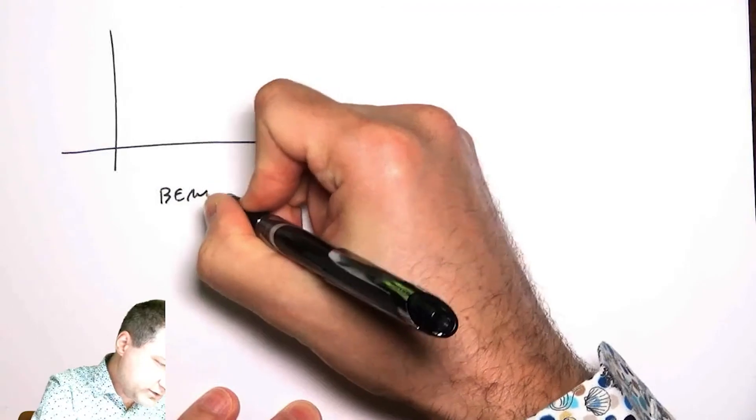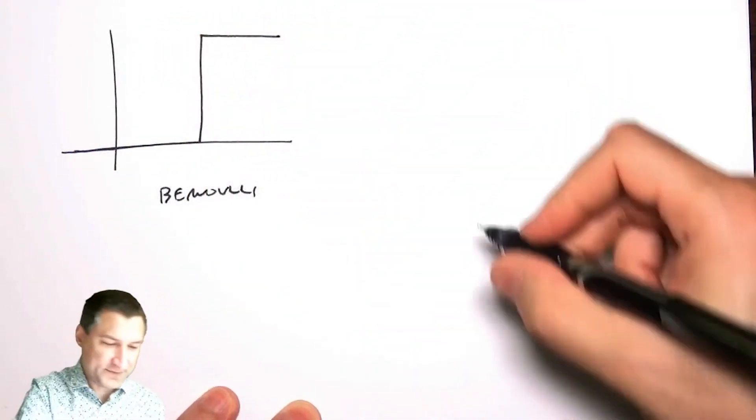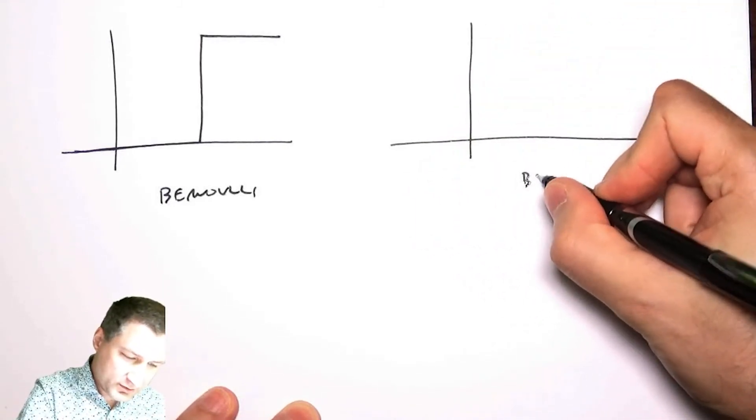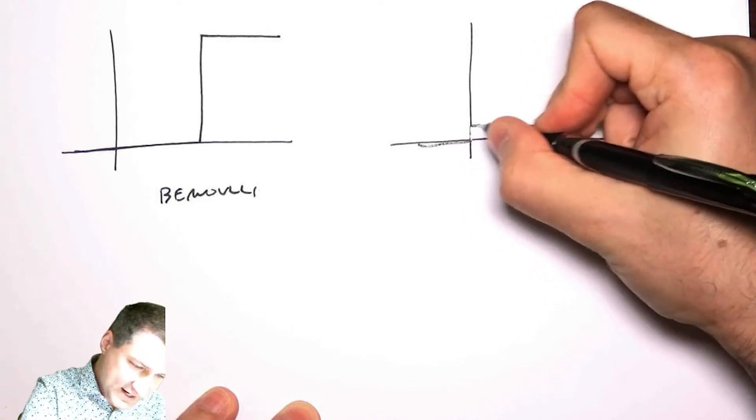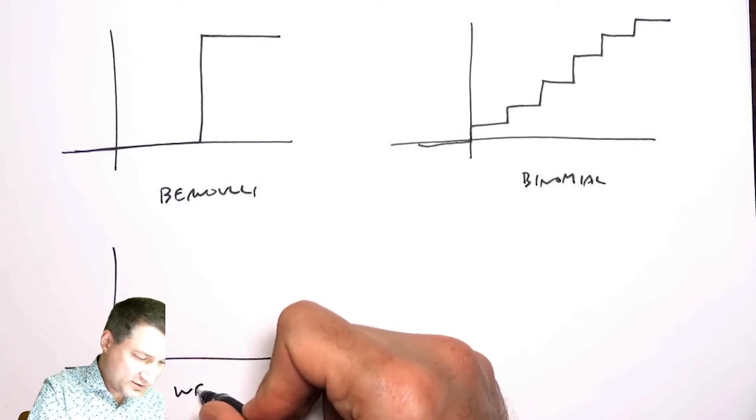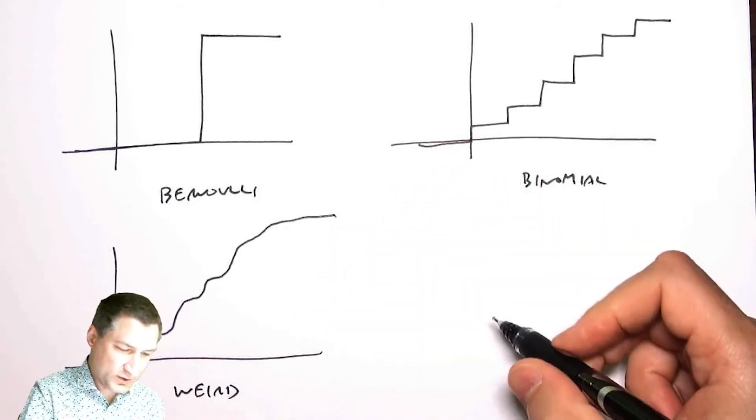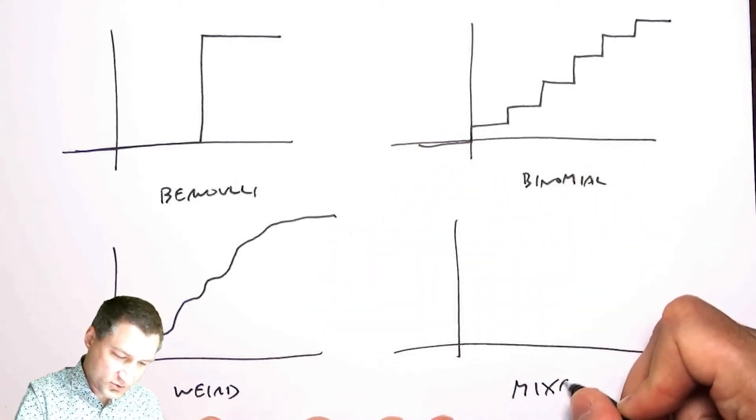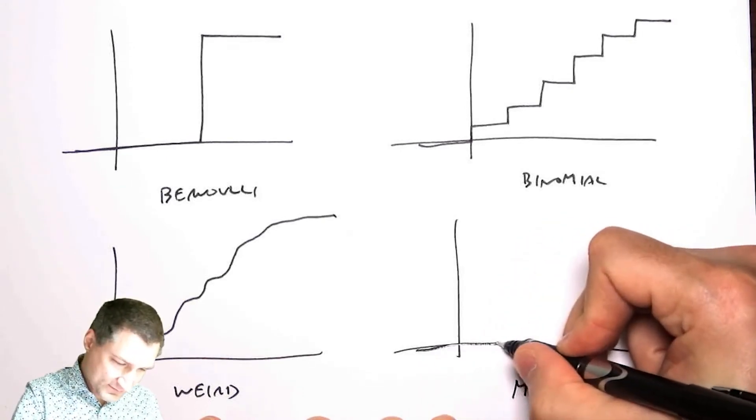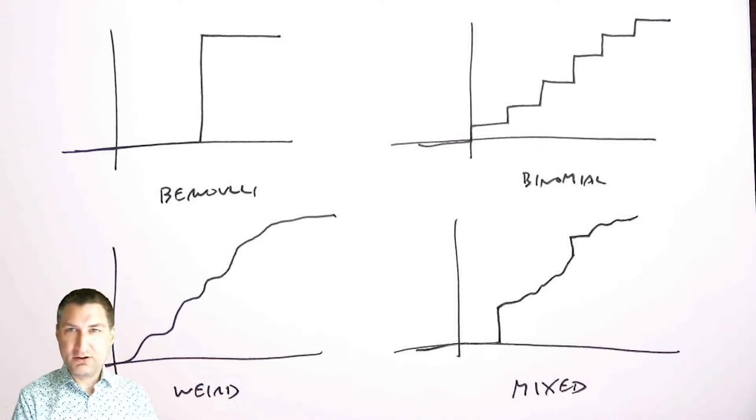For example, a Bernoulli CDF for each one looks like basically a step function, or a binomial random variable has kind of this stepwise look. I could have some weird CDF that takes its weird time monotonically getting to one, or I could have some bizarro mixed random variable that takes some steps, has some continuous parts, then takes another step. No matter what the underlying PDF is, eventually the CDF of this normalized sum goes to Gaussian.